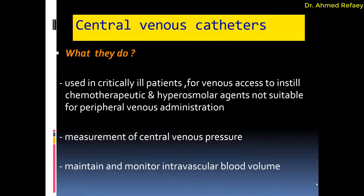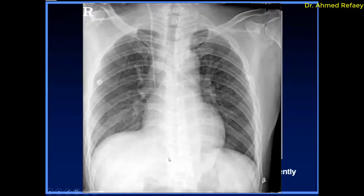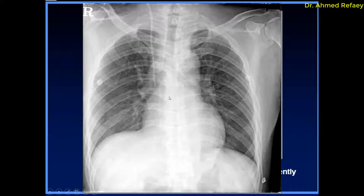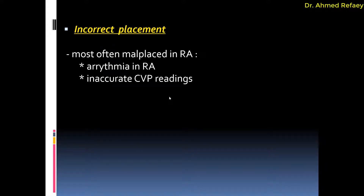Regarding correct placement of the central venous catheter, it has to descend lateral to the spine — this is very important — and its tip has to be in the region of the superior vena cava. As you see in this image and on this plain X-ray, this is an example of correct placement of a central venous catheter inserted through the right internal jugular vein, descending parallel to the spine on the right side with its tip in the region of the superior vena cava.